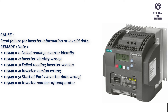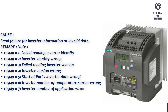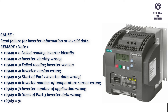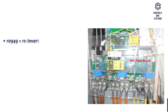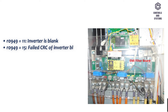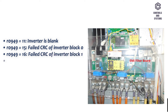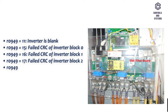R0949 equals 6: inverter number of temperature sensor wrong. R0949 equals 7: inverter number of application wrong. R0949 equals 8: start of part 3 inverter data wrong. R0949 equals 9: reading inverter data strain wrong. R0949 equals 10: inverter CRC failed. R0949 equals 11: inverter is blank. R0949 equals 15: failed CRC of inverter block 0. R0949 equals 16: failed CRC of inverter block 1. R0949 equals 17: failed CRC of inverter block 2.